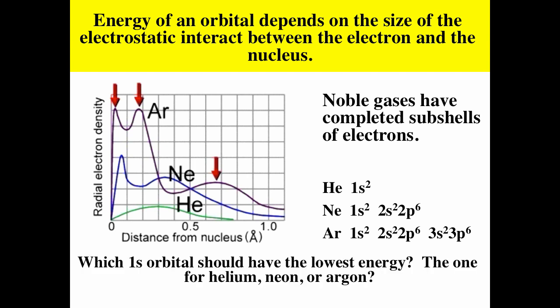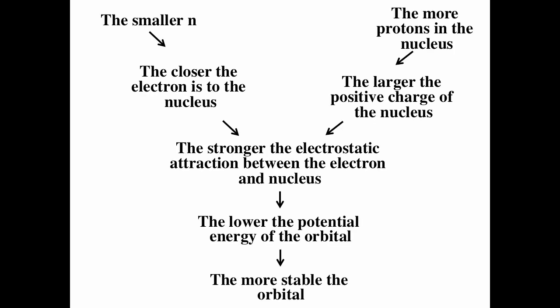The 1s orbital of argon has the lowest energy among these examples. Electrons fill the lowest energy orbitals first and fill orbitals according to the Pauli exclusion principle (maximum two electrons per orbital) and Hund's rule (when orbitals have the same energy, each electron gets its own orbital as long as possible). The energy of orbitals is dominated by electrostatic interaction between electrons and nucleus. The larger the effective nuclear charge, the stronger the electrostatic attraction and the lower the energy. The closer the electrons to the nucleus, the lower the orbital energy. That is why the 1s orbital is the lowest energy orbital for all atoms. Effective nuclear charge is affected by both the number of protons in the nucleus and the amount of screening.